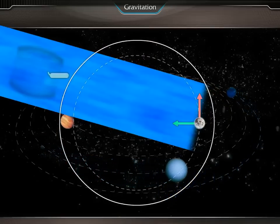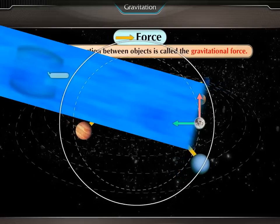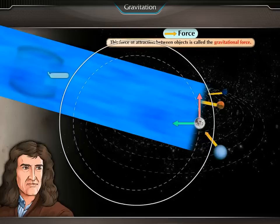Therefore, there exists a force between the sun and the planets. This force of attraction between objects is called the gravitational force. Newton's law of gravitation is also known as universal law of gravitation.